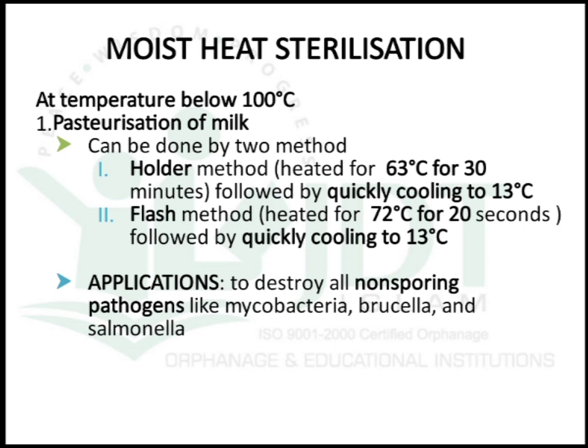The first method below 100°C is pasteurization of milk, which can be done by two methods: the holder method or the flash method. In the holder method, the substance is heated at 63°C for 30 minutes, followed by quick cooling to 13°C. In the flash method, it is heated at 72°C for 20 seconds, followed by quick cooling to 13°C. This method is mainly used to destroy non-sporing pathogens like Mycobacterium, Brucella, and Salmonella.